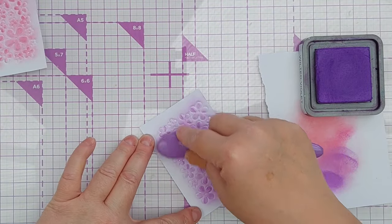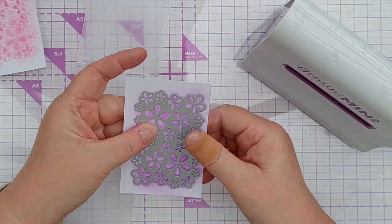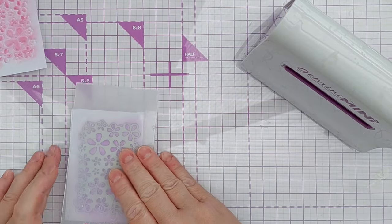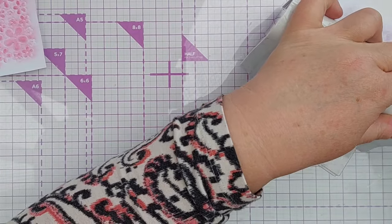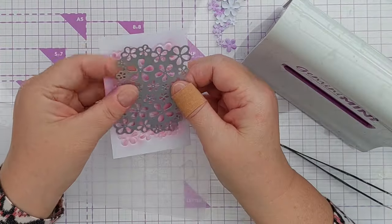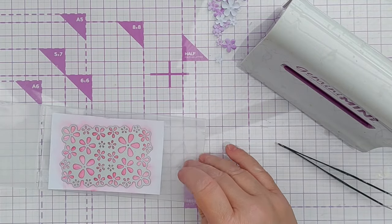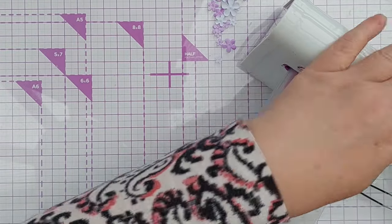Once those were done I put the die back over the embossed flowers. It was really easy to do because it kind of locked itself into place and then ran those two panels through my die cutting machine and that gave me lots of multi-size flowers with some lovely blending that I could then construct into double layer flowers.